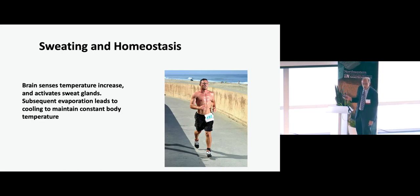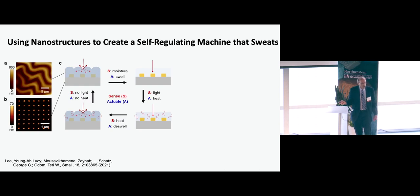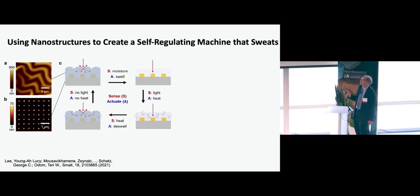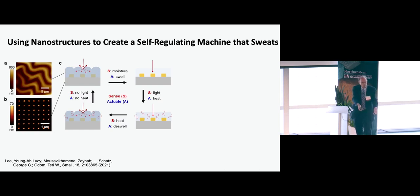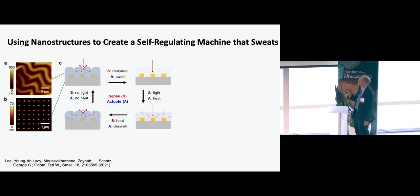We want to make something like that at the nanoscale. This is work from Terry Odom's group, in which they built a structure that actually does this. It consists of a hydrogel polymer that can absorb water and expand, or evaporate water and contract. You put the polymer on top of a glass substrate, with a gold nanoparticle array that was vapor-deposited before adding the polymer. First, you put it in the swell state—it expands, pushing against its boundaries, and has a flat surface.